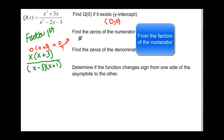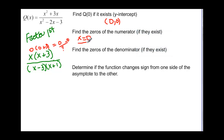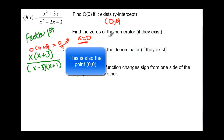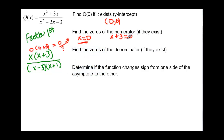For the zeros of the numerator, x is going to be equal to zero. And it also means that x + 3 = 0, so x is equal to negative 3. So my two zeros are at zero — which we figured from the y-intercept — and negative 3.